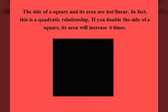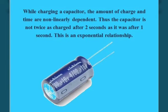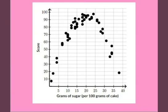It is fundamental to most physical and statistical phenomena. Let's take an example of non-linear relationship. The side of a square and its area are not linear — in fact, this is a quadratic relationship. If you double the side of a square, its area will increase four times. Next, while charging a capacitor, the amount of charge and time are non-linearly dependent. Thus, the capacitor is not twice as charged after two seconds as it was after one second — this is an exponential relationship, not a linear one.